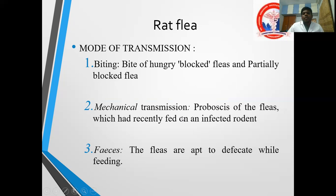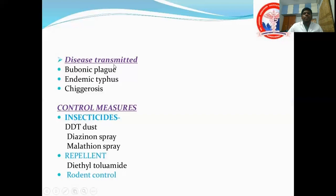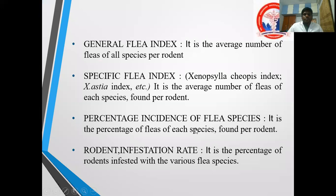Mechanical transmission occurs via the proboscis of a flea that recently fed on an infected rodent — the proboscis or other body parts may carry Yersinia pestis. Transmission through feces is also possible. Diseases transmitted include bubonic plague, endemic typhus, and murine typhus.